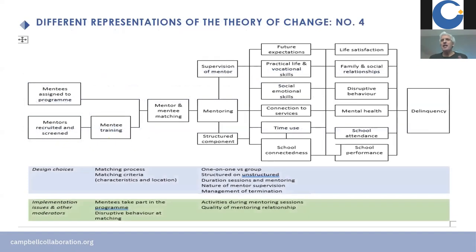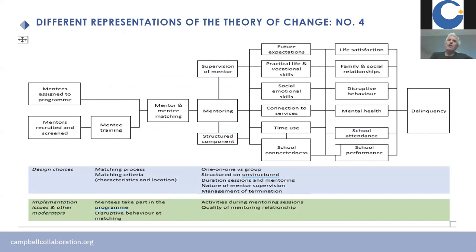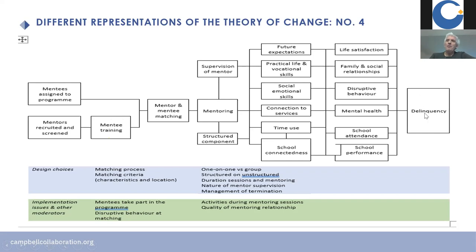Here's my theory of change for mentoring. It starts with recruiting and screening mentors, training mentors, and matching them with mentees. Then the mentoring takes place, possibly with a structured component, and the mentor needs to be supervised — though evaluations show mentoring supervision is usually very weak. This leads to intermediate outcomes, final outcomes, and the delinquency outcome we're interested in. Design choices include matching criteria around characteristics and location, one-on-one versus group, structured or not, duration, supervision, and termination. Termination comes across very strongly in the qualitative literature: children basically feel abandoned at termination — you can actually reverse all the gains made during the programme through badly managed termination.